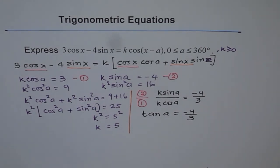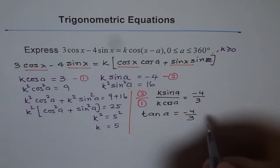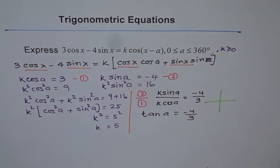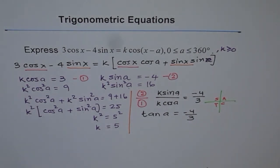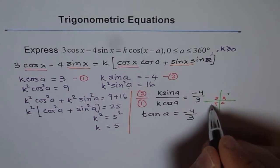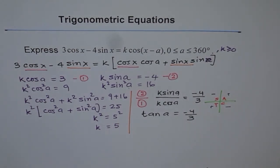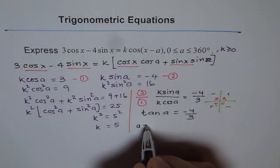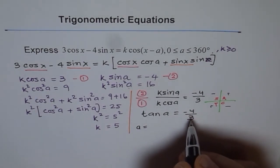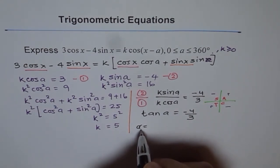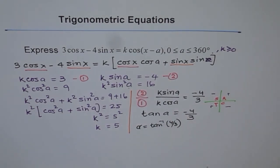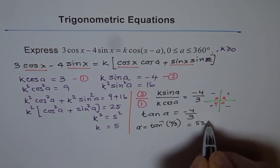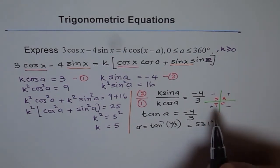Now tan is negative in two quadrants: either quadrant 2 or quadrant 4. Tan is positive in quadrants 1 and 3, but negative in quadrants 2 and 4. We can use our calculator to find what a is. The related acute angle will be tan inverse of 4 over 3: 53.1 degrees. But we need tan a equals minus 4 over 3, so our answers are in quadrant 2 and quadrant 4, where the related acute angle is 53.1.